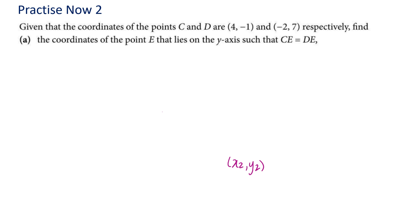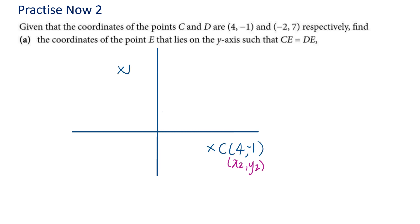This question is from your textbook. Now let's look at a more challenging question. We're given two points C and D, and a third point E that lies on the y-axis, such that the distance CE equals the distance DE. Any point on the y-axis has x-coordinate 0, so we call it (0, y). We need to find this unknown y value. Let's sketch the diagram first.